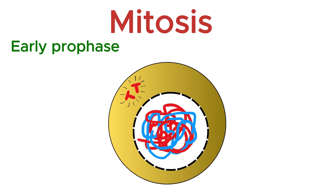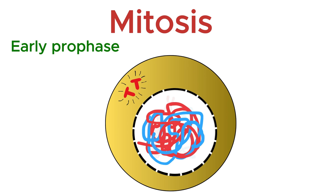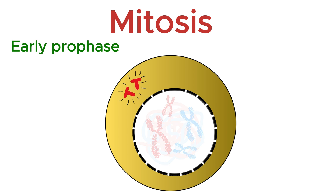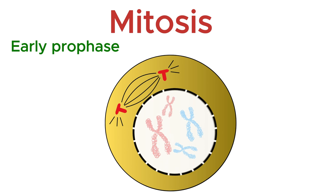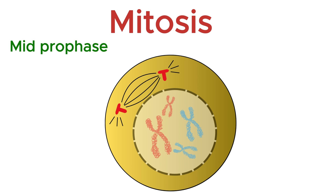In early prophase, chromatin starts to condense into visible chromosomes. Centrioles begin to move toward opposite poles of the cell. Spindle fibers start forming, and the nucleolus begins to disappear.